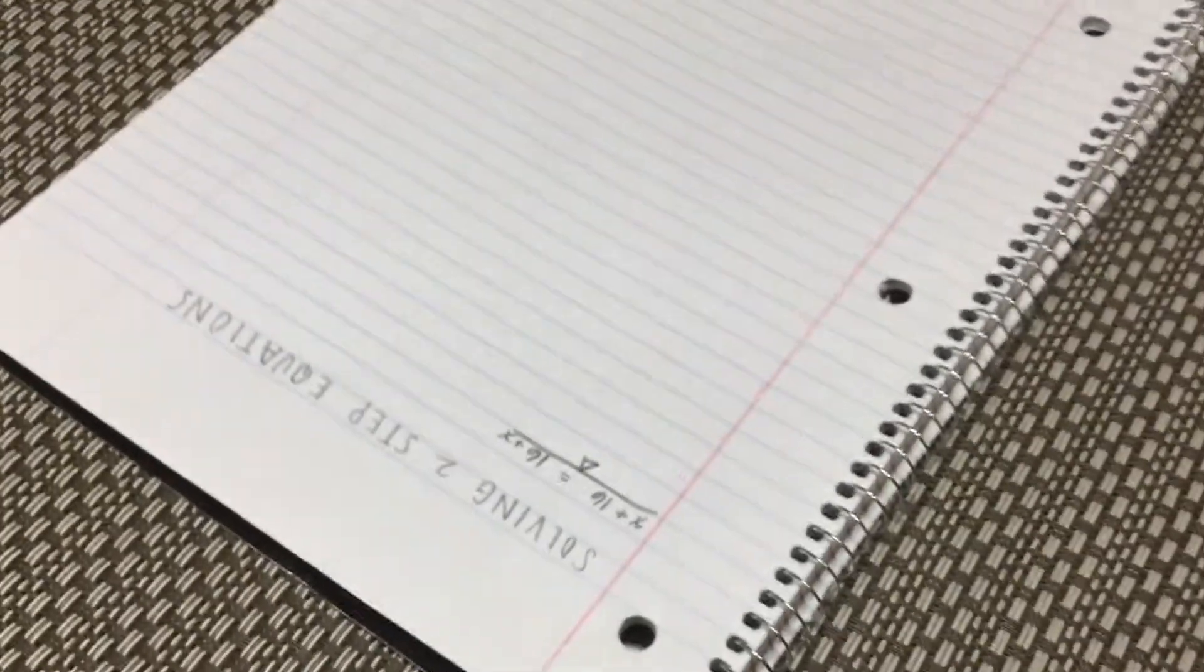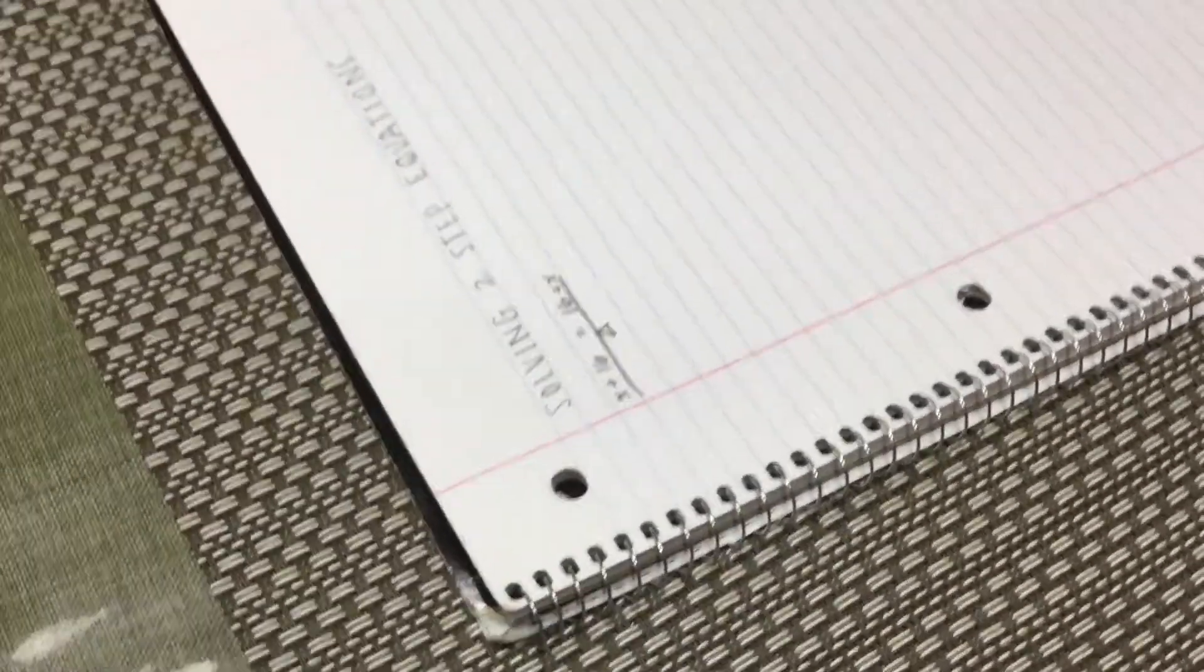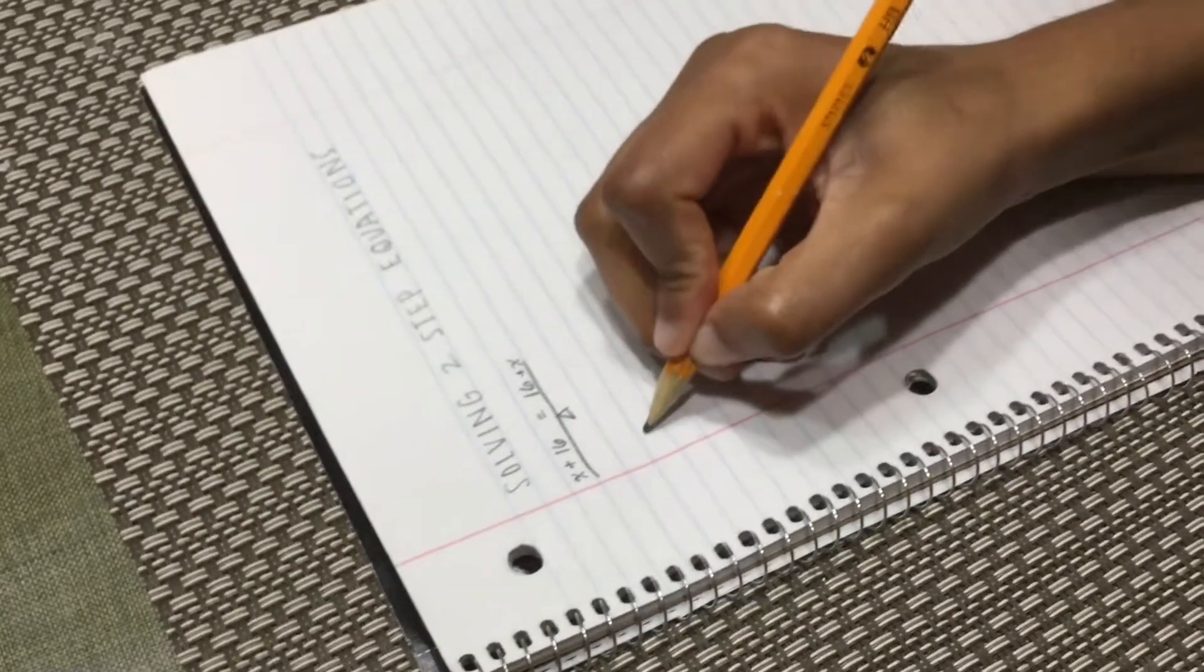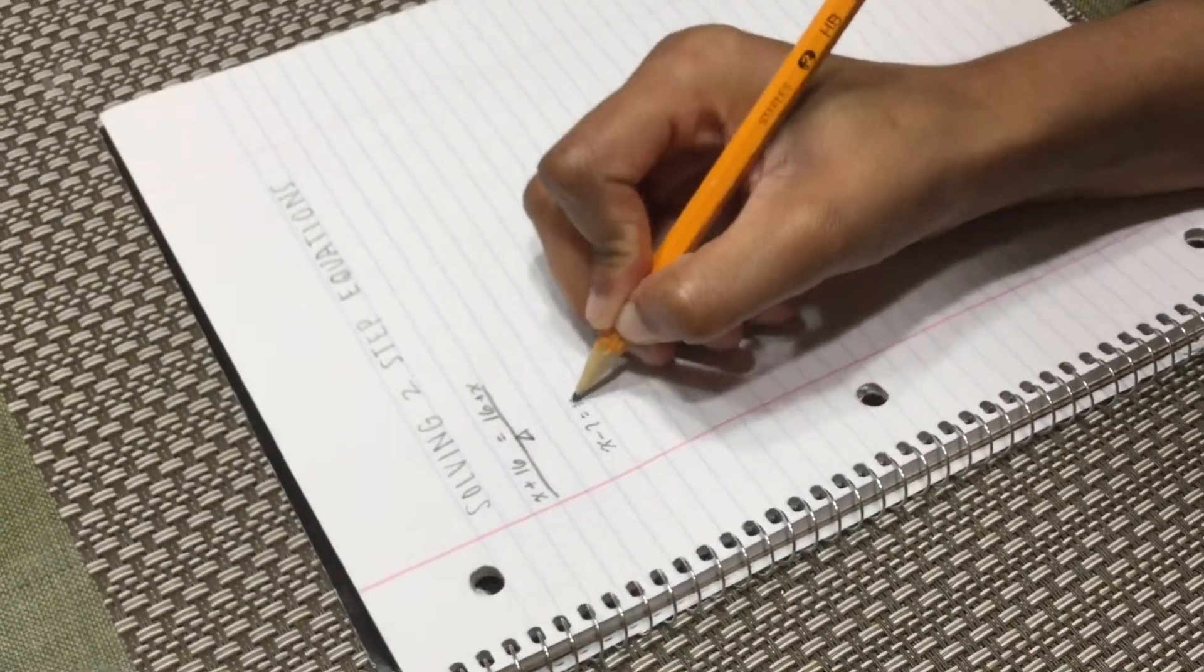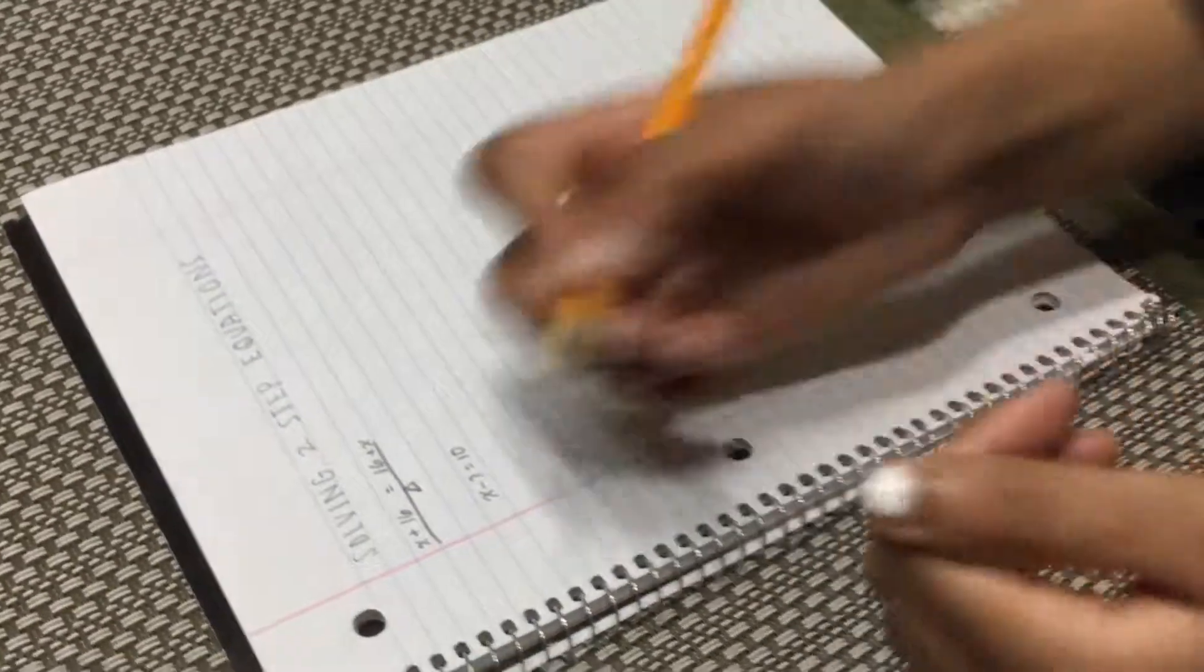So now that we know what an equation really means, let's look at one-step equations, just super fast. Now, I have to isolate my x in order to solve any equation. I have to isolate x and see what x means.